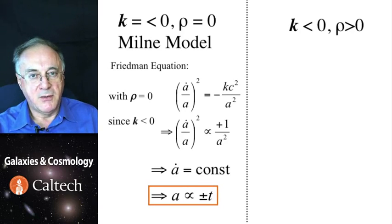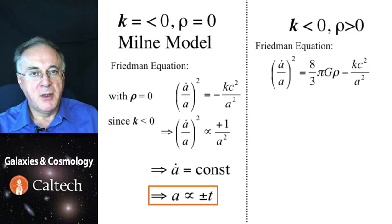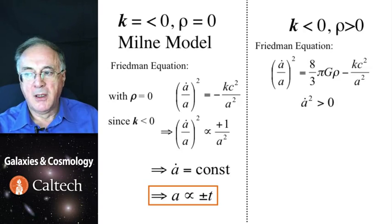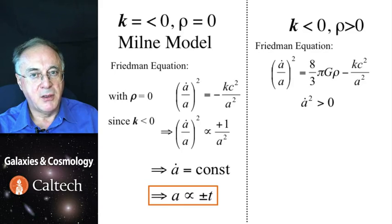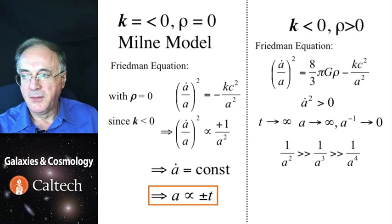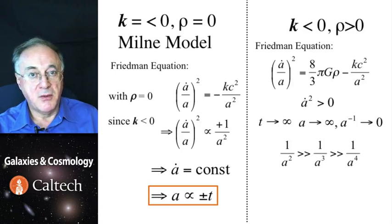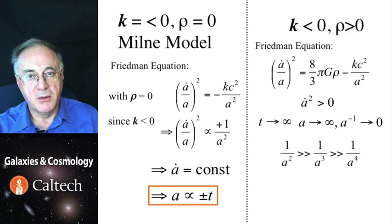Now let's consider a slightly different version of that. Again, curvature constant is negative, but this time density is finite and positive. The Friedman equation is now shown here. And this time, the square of the time derivative of scale factor is positive. Well, as the universe expands, time goes to infinity, scale factor will go to infinity, and one over a scale factor will go to zero.